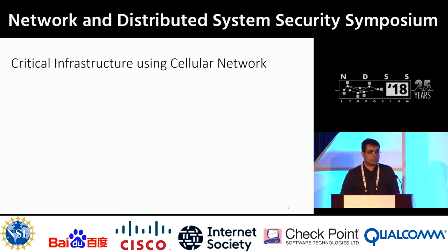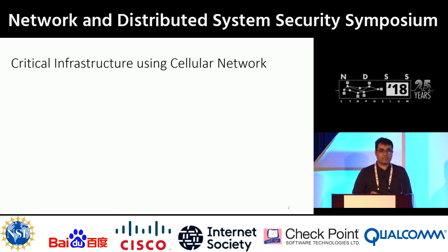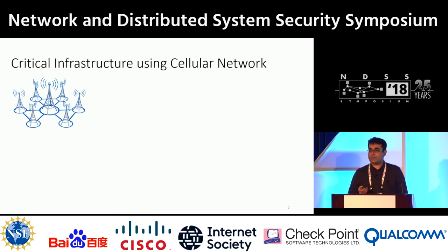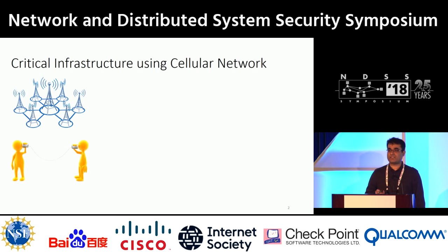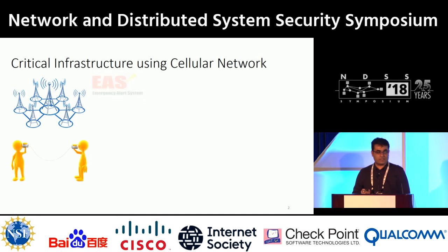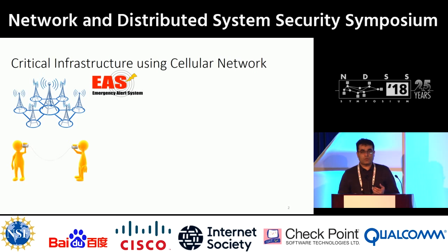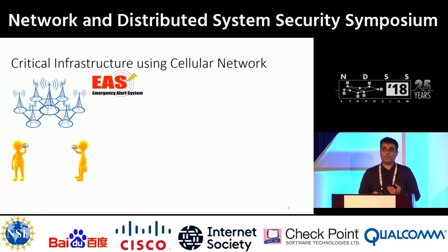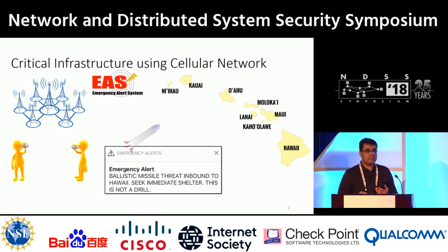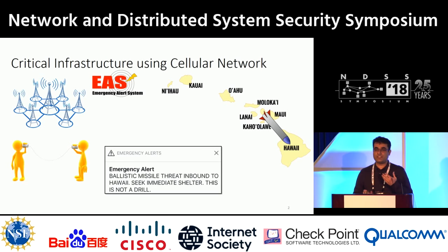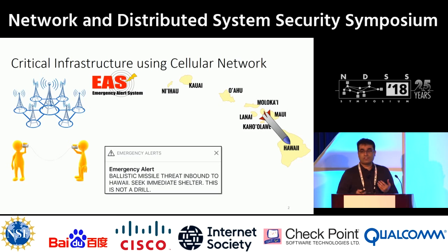Cellular network is considered one of the critical infrastructures for a nation. It has been widely used for personal communication as well as broadcasting public safety messages in case of emergencies, like tsunami or earthquake. Last month, we may have come across the news of the ballistic missile alert in the state of Hawaii, where such a ballistic missile alert was issued through the cellular network infrastructure.